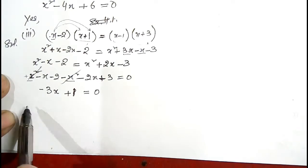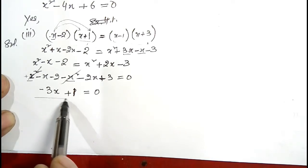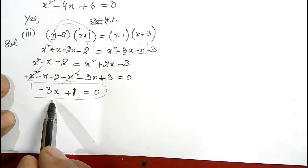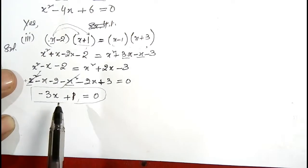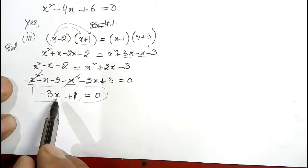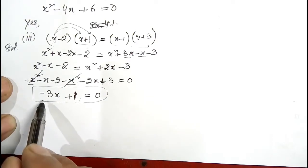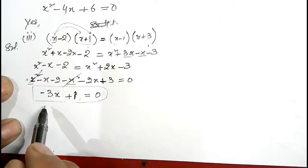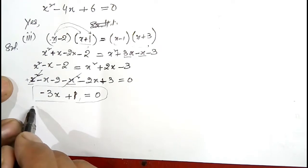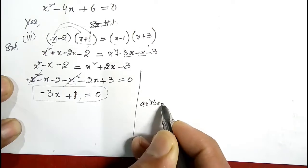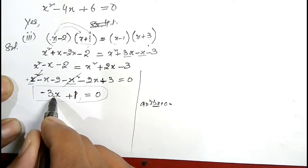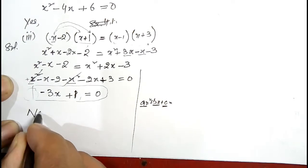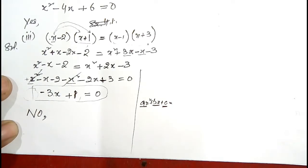From our final simplified expression, we check whether it matches the standard form of a quadratic equation, which is ax squared plus bx plus c equals zero. Here the x squared term is missing from this expression. If x squared is missing in any expression, we cannot say it is a quadratic equation. Here bx is available as minus 3x, and c is available as 1, but x squared is missing. Therefore, this is NOT a quadratic equation.